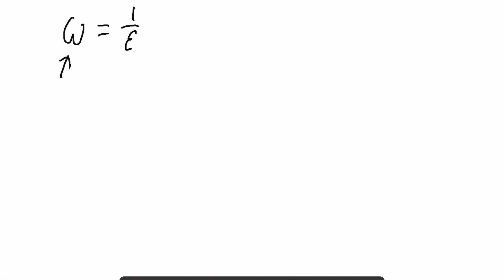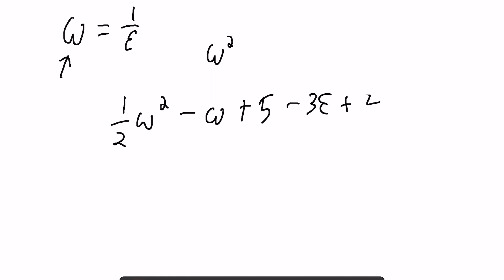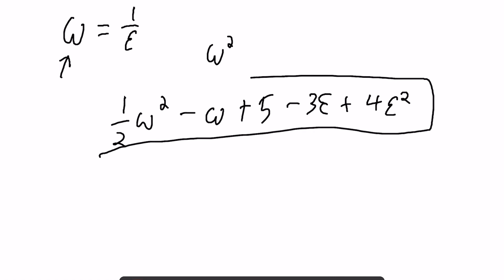Similarly, you have omega, and omega is simply one over epsilon. That's our base infinity. Just like you can have epsilon squared, you can have infinity squared. So you can have a hyperreal number like one half omega squared minus omega plus five minus three epsilon plus four epsilon squared. This is a number in the hyperreal system.